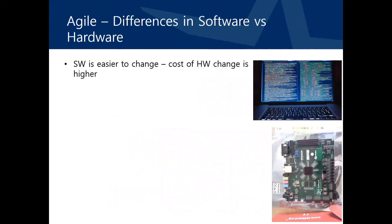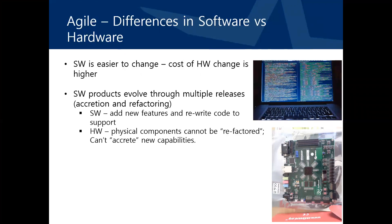While the agile process for software is well-defined and commonly executed, the process for agile hardware development is less well-defined. It's important to first highlight the differences in software versus hardware development. First, software is easier to change — the cost of changes in hardware is typically higher. Software products typically allow for multiple releases, and there is often incremental functionality and refactoring of code, for instance to improve code readability or reduce complexity.